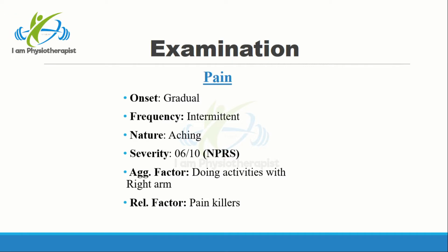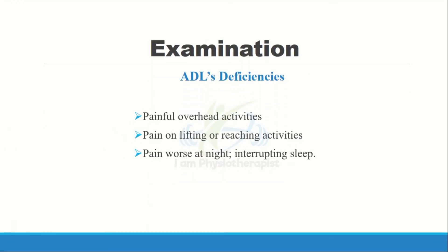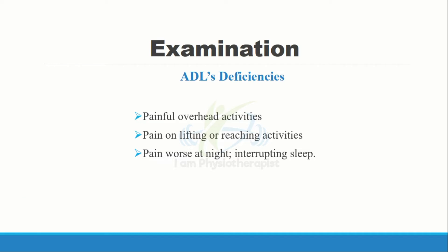The aggravating factor was repetitive activities with the right arm. Pain was relieved by taking painkillers. The following activities of daily life were affected: pain while doing overhead activities, lifting or reaching objects. Pain became worse at night and was interrupting her sleep.